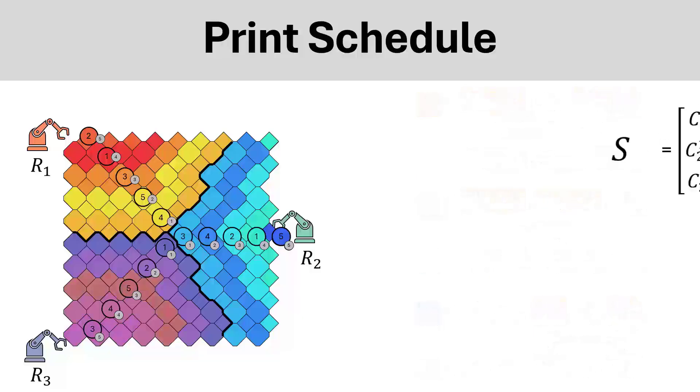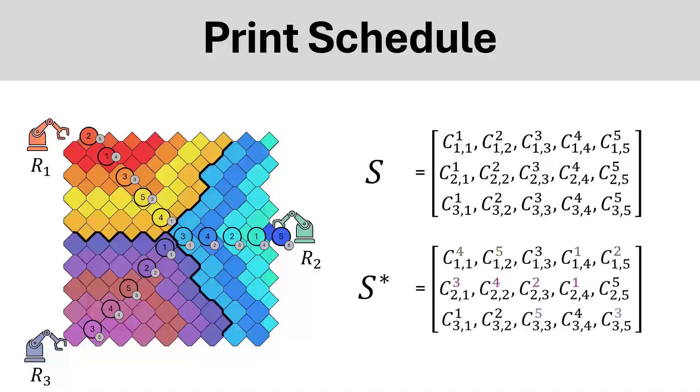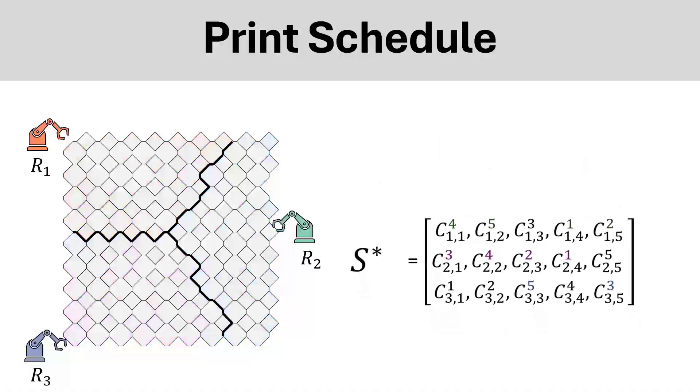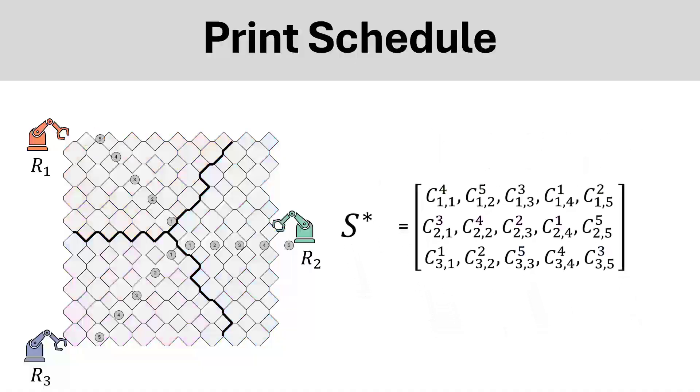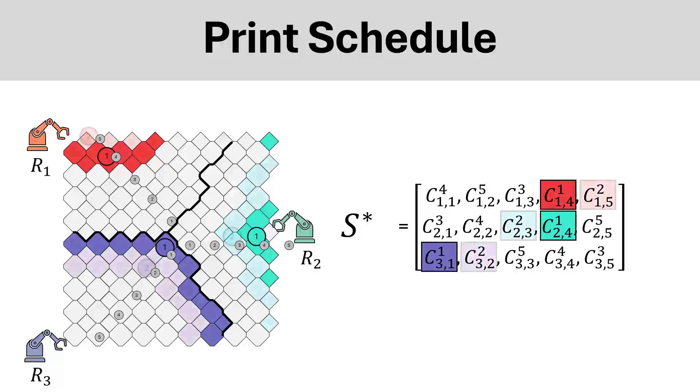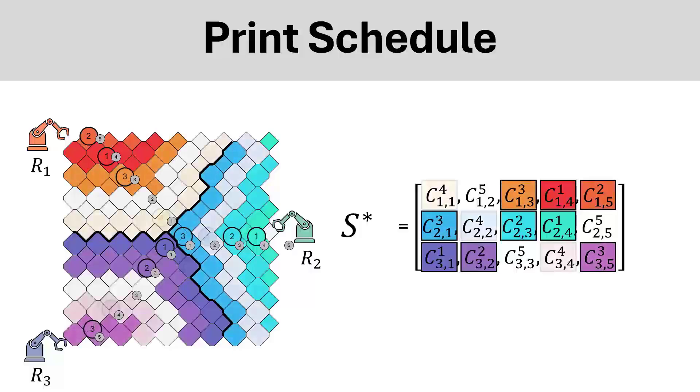Here you can see the change from changing each robot's schedule. This is how we crossover and mutate for genetic algorithm. We can also visualize how this printing schedule will occur, where the first clusters will be printed first, which in this case, robot 3 prints cluster 1 first. Then, for robot 3, it will print cluster 2 second, and then cluster 5 will be printed third, cluster 4 will be printed fourth, and cluster 3 will be printed fifth.